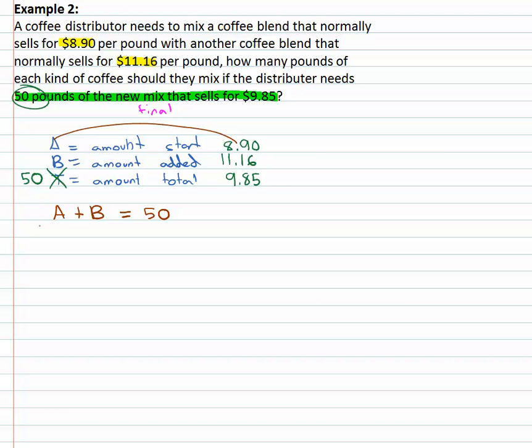we're going to multiply each amount by the money that we get for each one. So the A's get multiplied by eight ninety or eight point nine A. The B's need to be multiplied by eleven sixteen to get the amount of money found in the B's. Equals the fifty times the nine point eighty five.